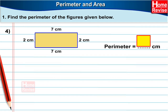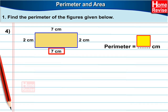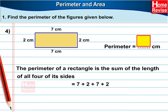Next is a rectangle with sides seven centimetres, two centimetres, seven centimetres and two centimetres. The perimeter of a rectangle is the sum of the length of all its four sides, which means it is seven plus two plus seven plus two, which is equal to eighteen centimetres. Therefore, the perimeter is eighteen centimetres.